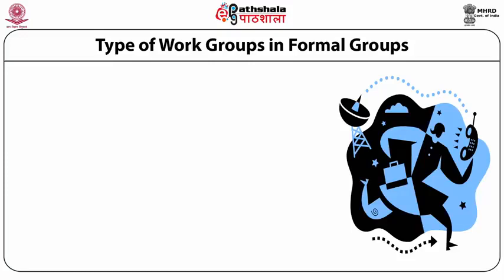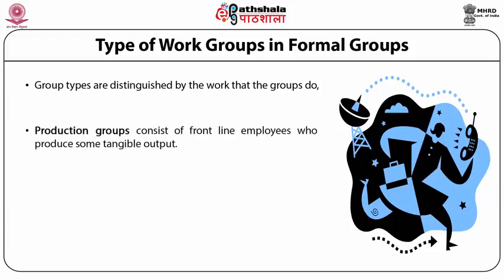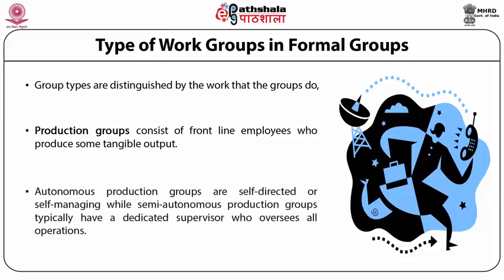Group types are distinguished by the work that these groups do. A production group consists of frontline employees who produce some tangible output. The autonomous production groups are self-directed or self-managing, while semi-autonomous production groups typically have a dedicated supervisor who oversees all the operations on the shop floor.